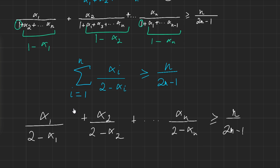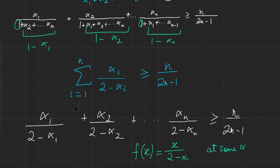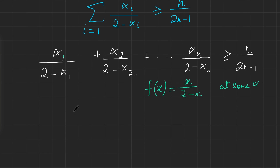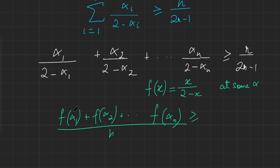Each term in the sum is just the output of the function f(x) = x/(2 − x) evaluated at αᵢ. So the sum equals f(α₁) + f(α₂) + … + f(αₙ), and dividing both sides by n, we need to show the average output f(α₁) + … + f(αₙ) over n is greater than or equal to 1/(2n − 1).